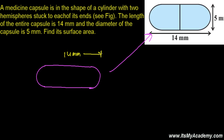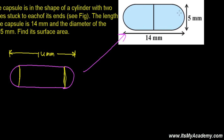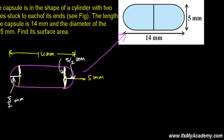The total length is 14 mm, including the two hemispheres stuck on each end as shown in the figure. The diameter of the capsule is 5 mm, so the radius is 5/2 mm. The radius applies equally to the cylinder and both hemispheres.